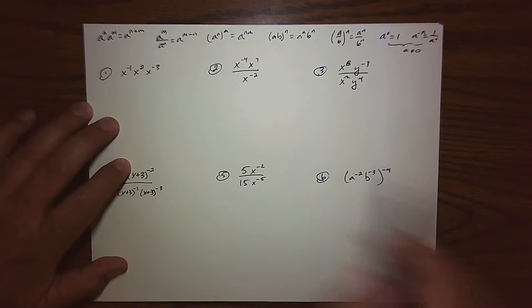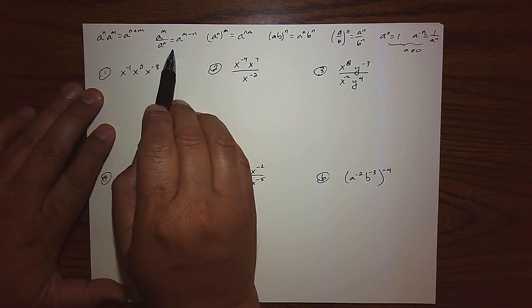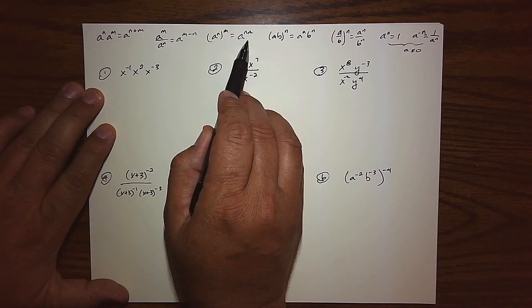Okay, so now we know all our rules, right? We have the product rule when we add exponents, the quotient rule when we subtract exponents, the power of a power rule when we multiply exponents.